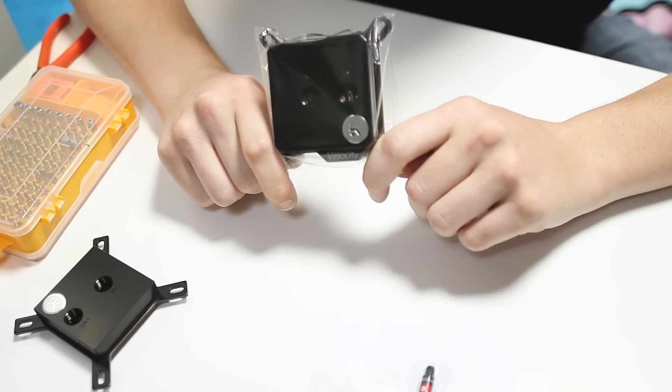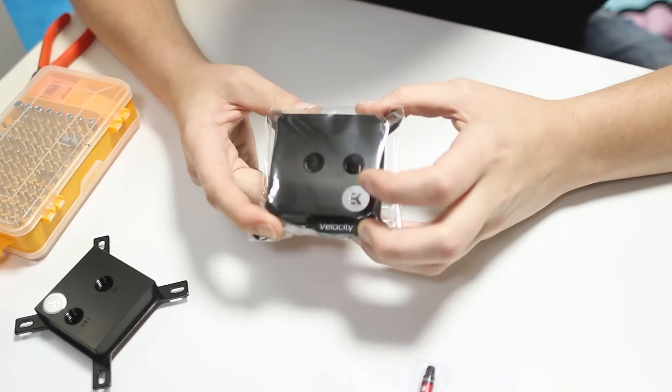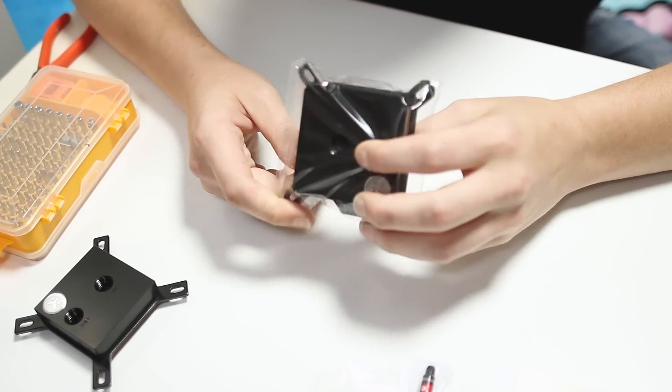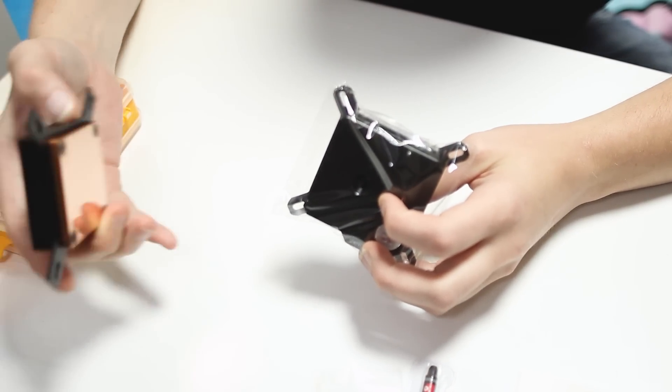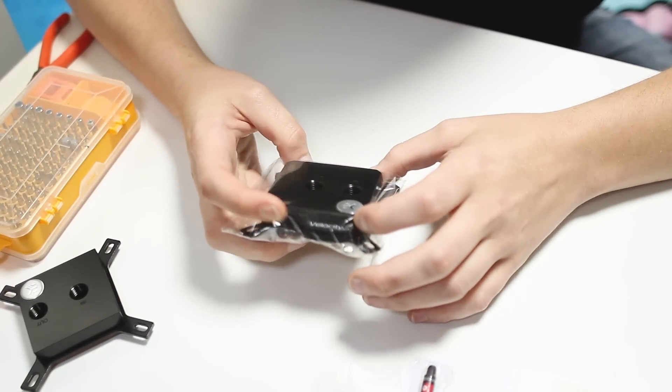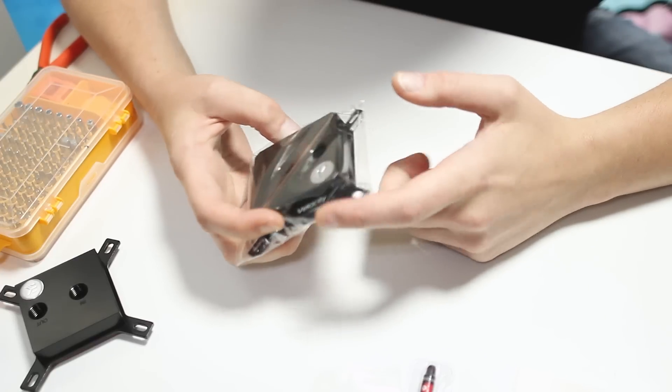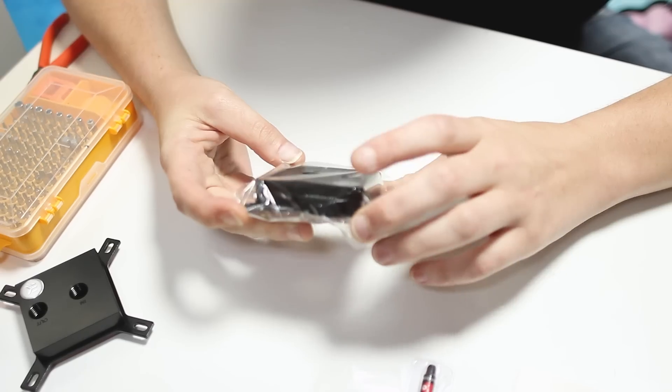The Velocity blocks come in different finishes. This is the acetal and copper block, so it's the same as this Supremacy EVO here I have. They come in a really nice nickel finish. And they also come with RGB options that actually look, some of them look quite tasteful I think.